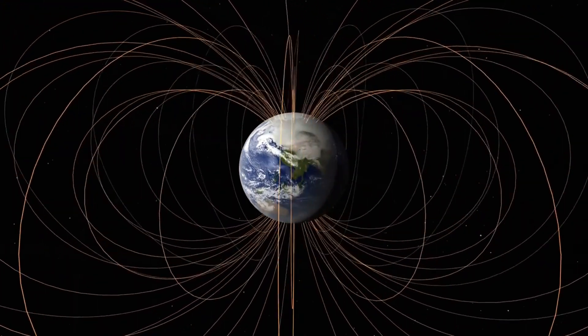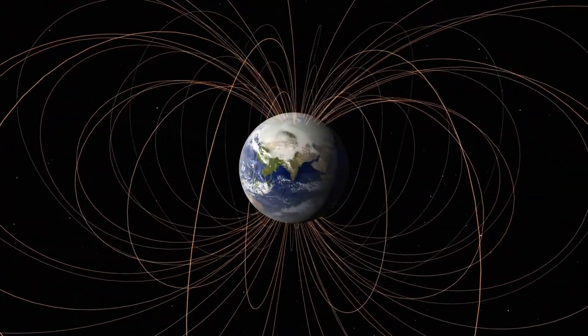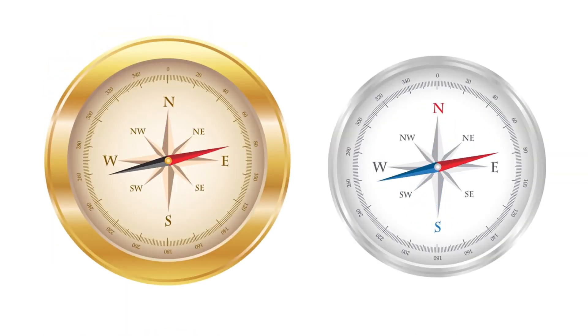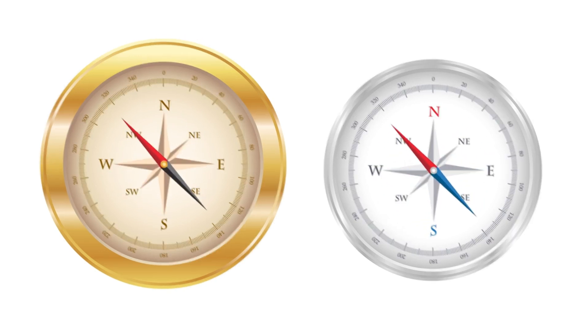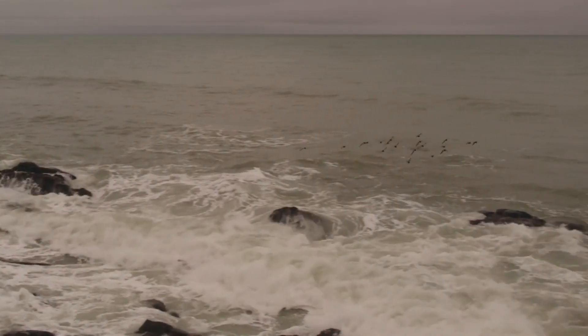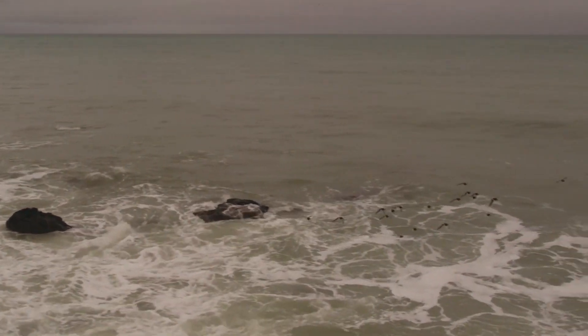Did you know that the Earth's magnetic field plays a crucial role in navigation? Compasses work by aligning with the magnetic field, allowing explorers and travelers to find their way. Even some animals, like birds and sea turtles, use the magnetic field to navigate during migration.